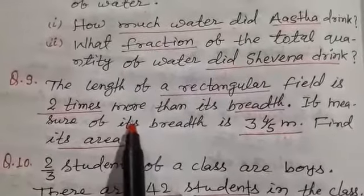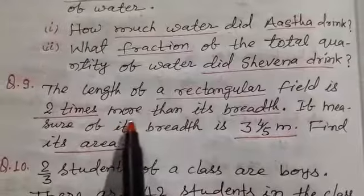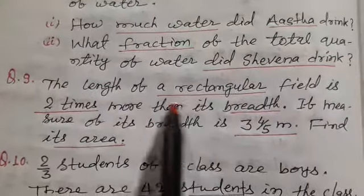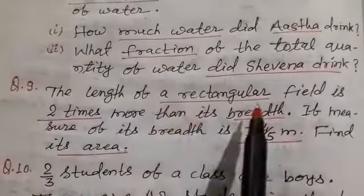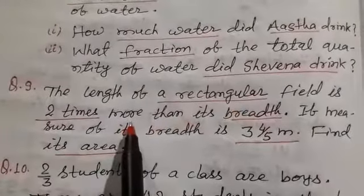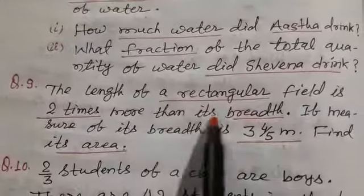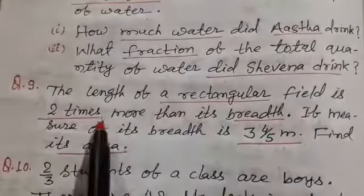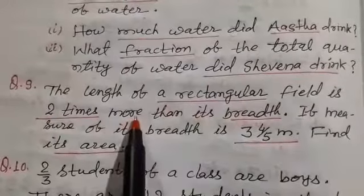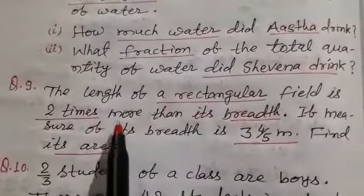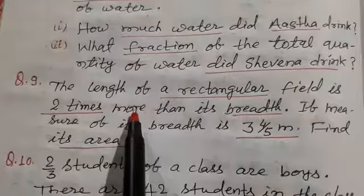For doing this question, we take breadth of this rectangular field is x meter. So 2 times of it, 2x. 2 times more than its breadth, so length is equal to 2x. Now in this way, we can do this question easily.